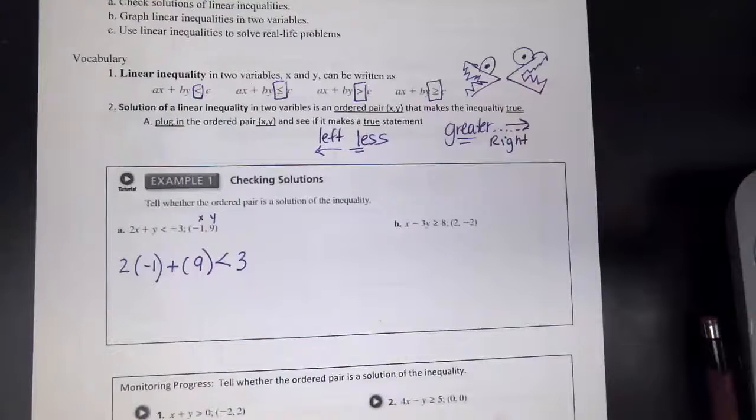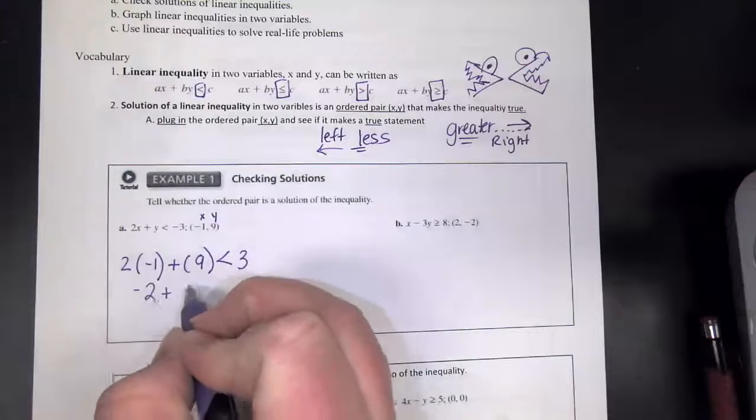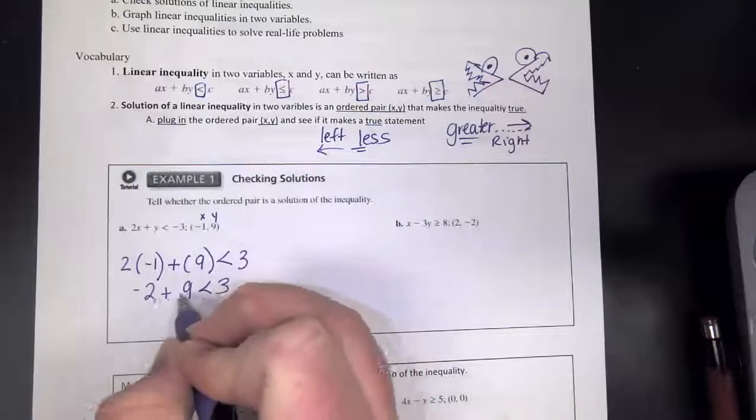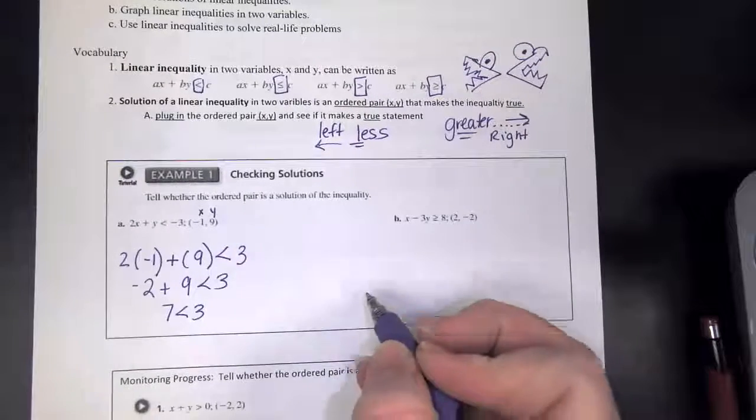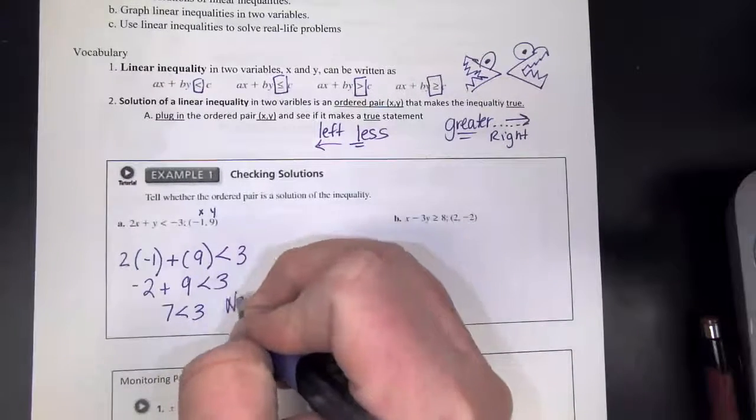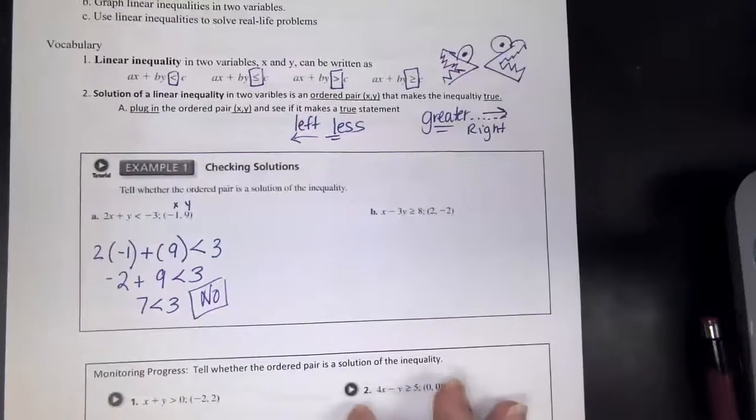Okay, and we're going to remember that greater are all numbers to the right, where less are all numbers to the left, greater to the right, less to the left. Okay, so let's see if the statement is true.